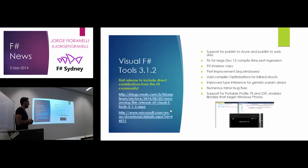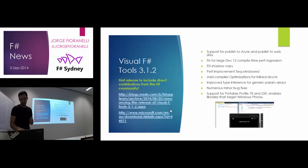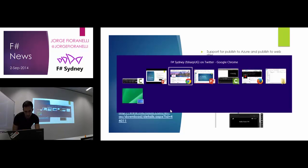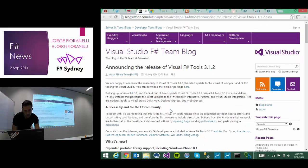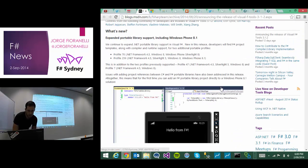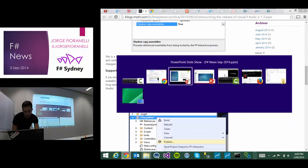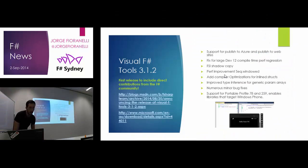Now you could target the portable profile for Windows Phone using the F# tools. There are two URLs — one describing all the changes, and the other is about the download.